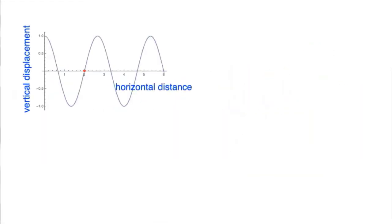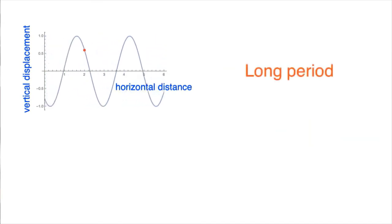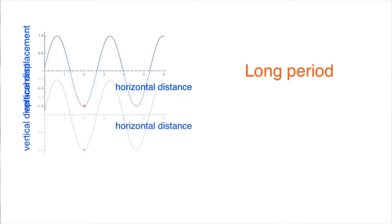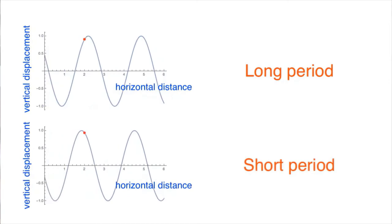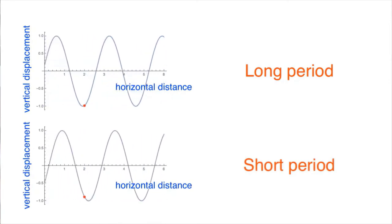Here's a static wave frozen in time. Let's unfreeze it and see what it looks like if it has a long period. Let's freeze it again and restart it with a shorter period. As you can see, a wave of given wavelength and amplitude can have different periods.